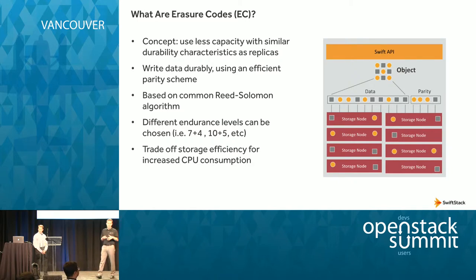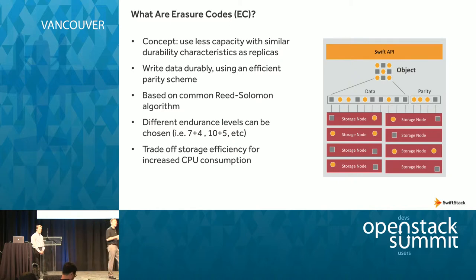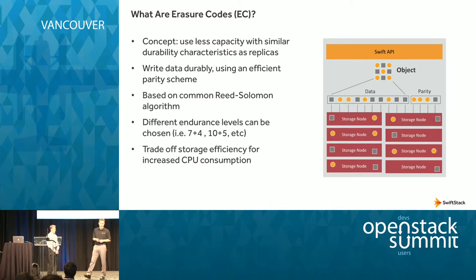From a low-level perspective, the way that erasure codes are implemented is just a traditional Reed-Solomon algorithm. You can tune how many segments or fragments you want to use for parity versus how many you use for data. Those are all tunables that you can choose for different ways of storing the data that you have.